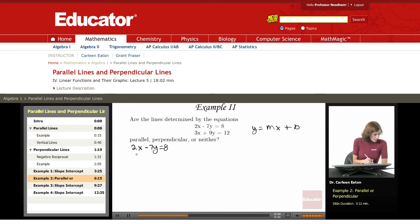I'm going to subtract 2x from both sides to move that over to the other side to get it into this form. That gives me minus 7y equals negative 2x plus 8.